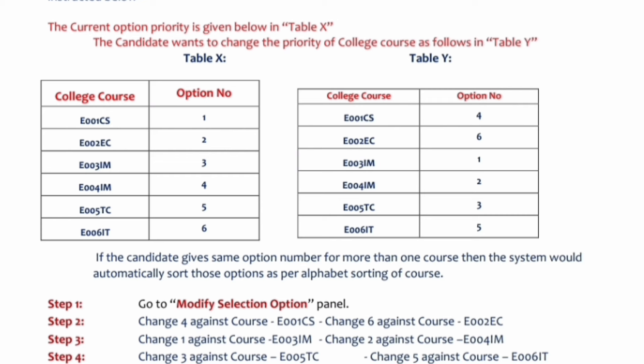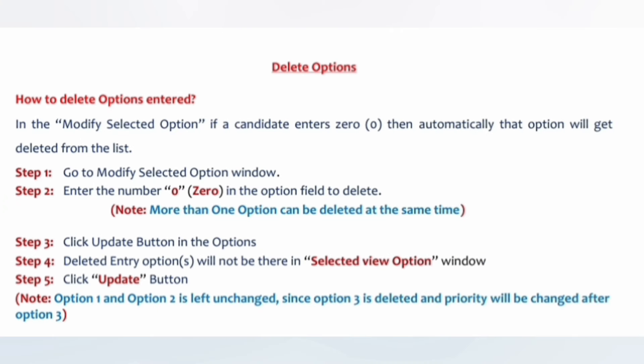You can also add new options in the mock round — additions are allowed up through the mock round until Round 1, since no allotment has happened yet. To delete an option, go to the 'Delete Options' window, open the selection, and type '0' in front of any option you want to delete. Zero means you are not giving it any priority number, which removes it. Add zero in front of all options you want to delete.